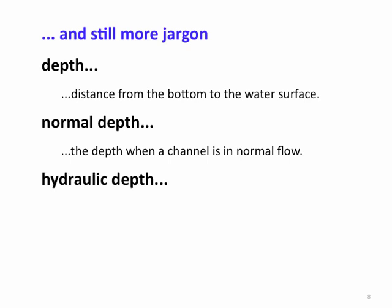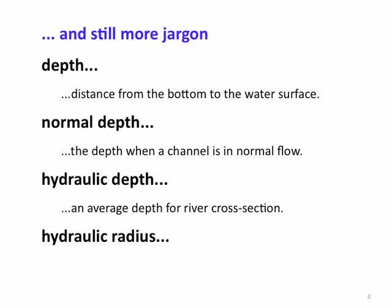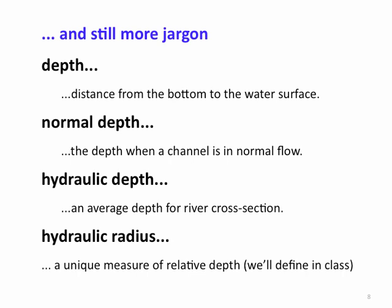Hydraulic depth is an average depth for a river cross section. Finally, we have hydraulic radius — which is confusing because it's not actually a radius. We consider it a unique measure of the relative depth for an open channel, and we'll define it in class and explain why we use it.